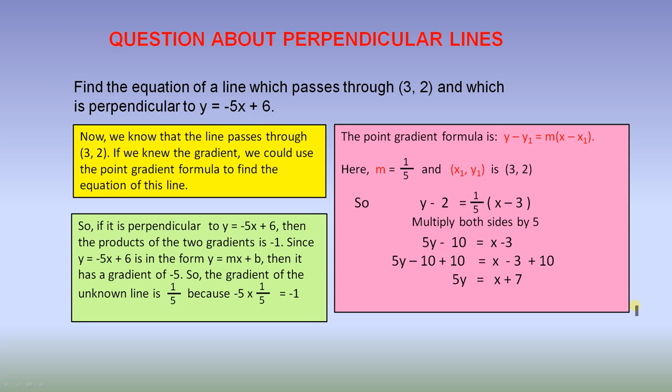Question about perpendicular lines. Find the equation of a line which passes through (3, 2), and which is perpendicular to y = -5x + 6. Now, we know that the line passes through (3, 2). That's the information we've been given. If we knew the gradient, we could use the point gradient formula to find the equation of this line.